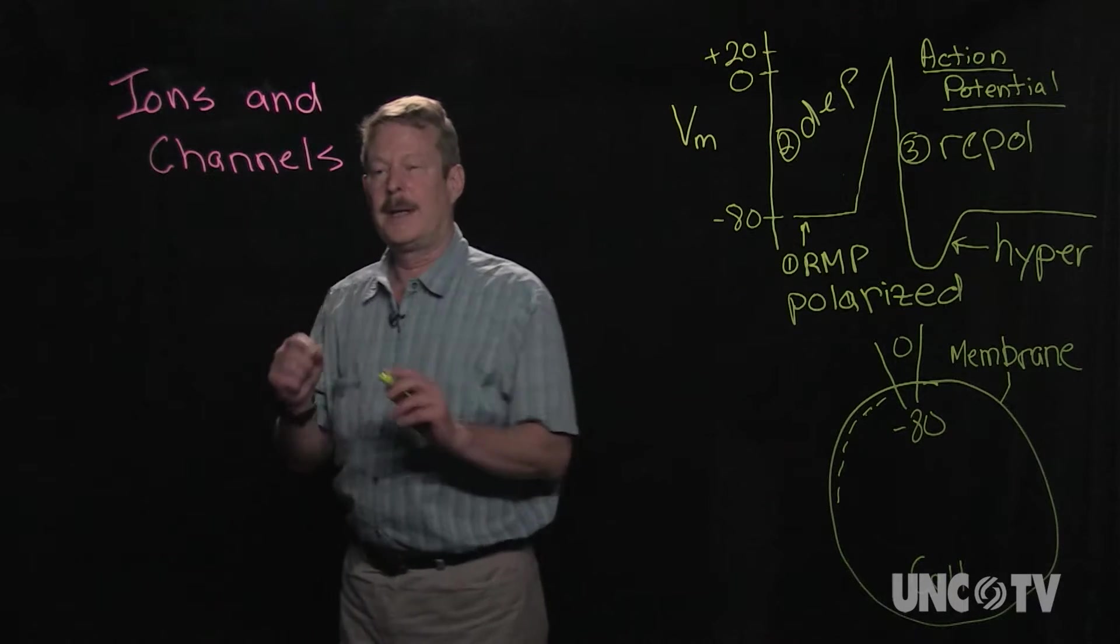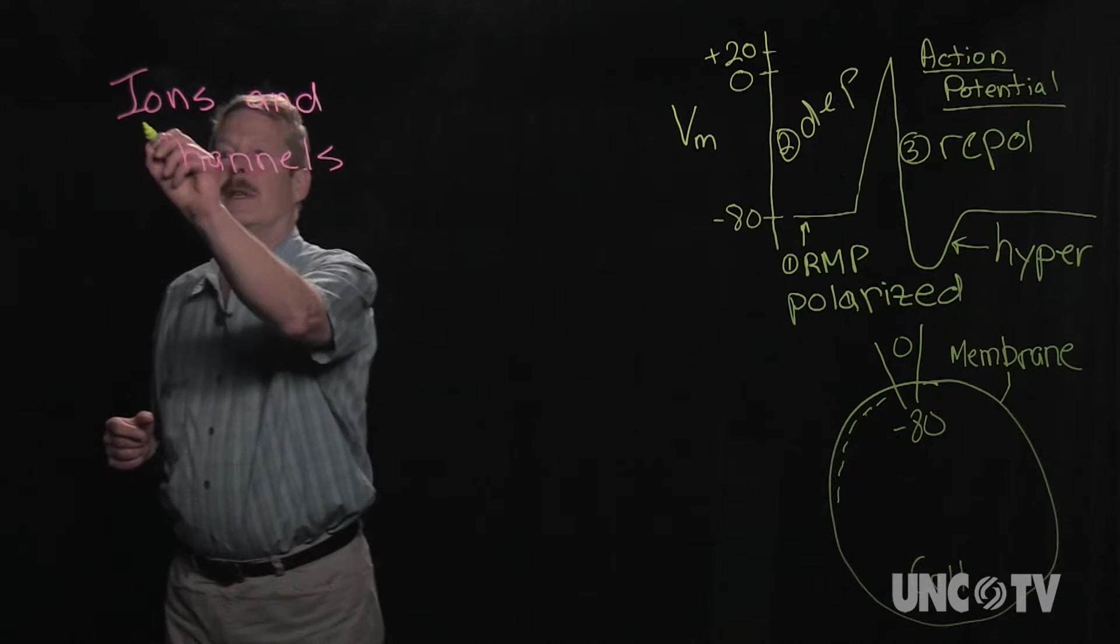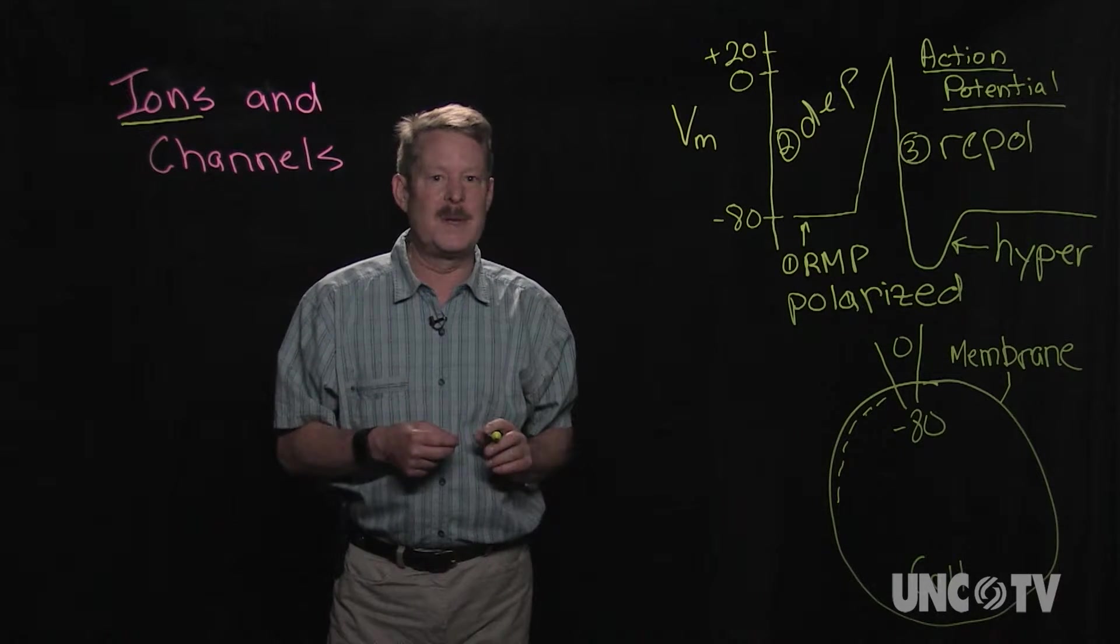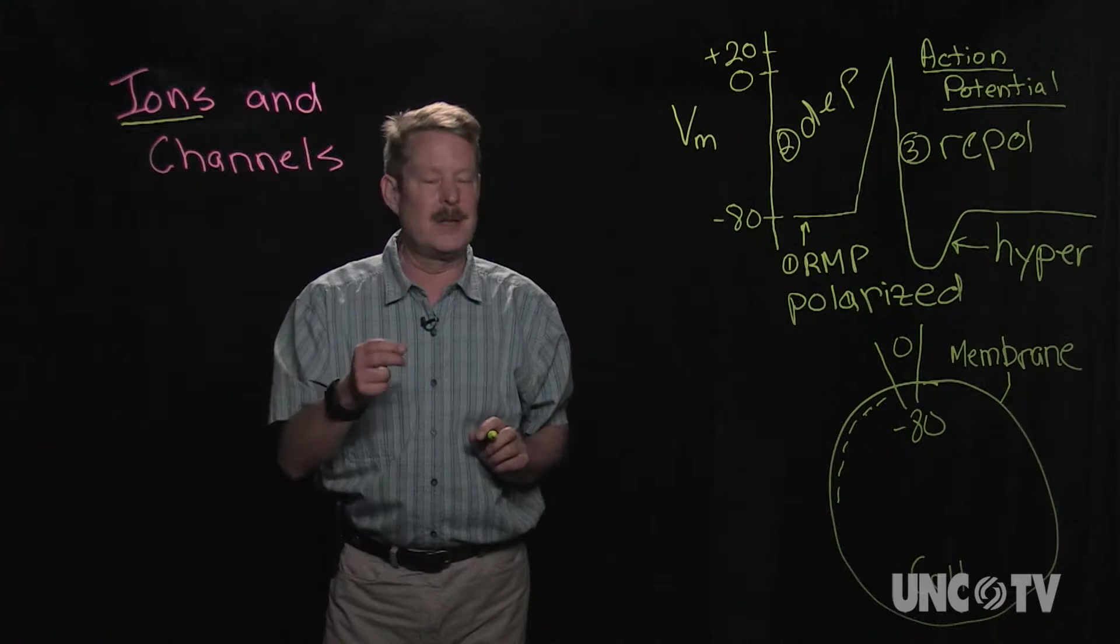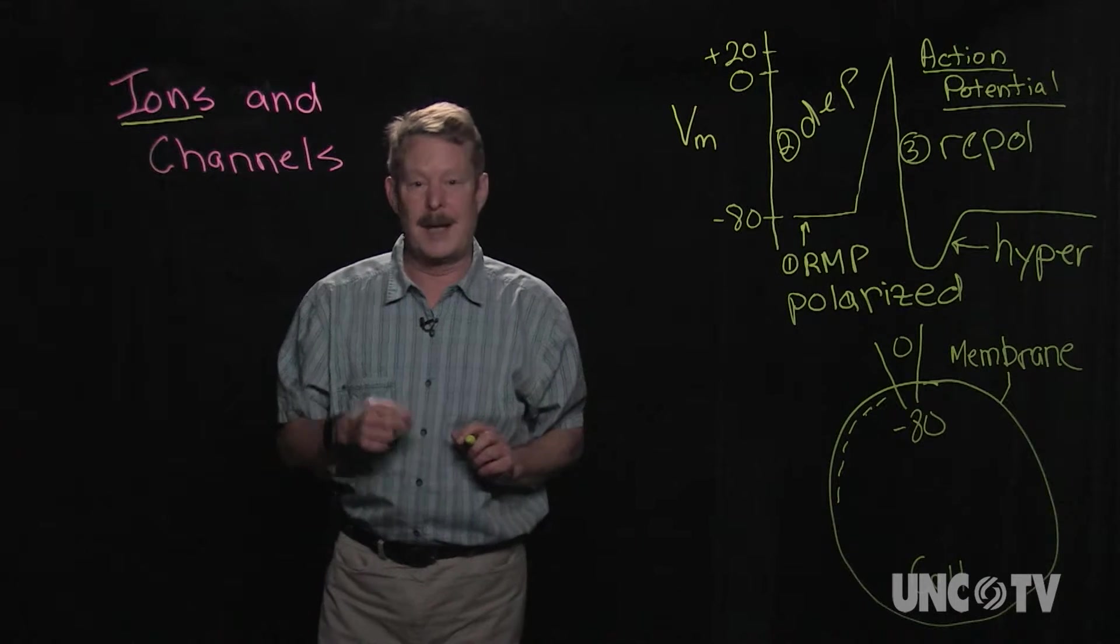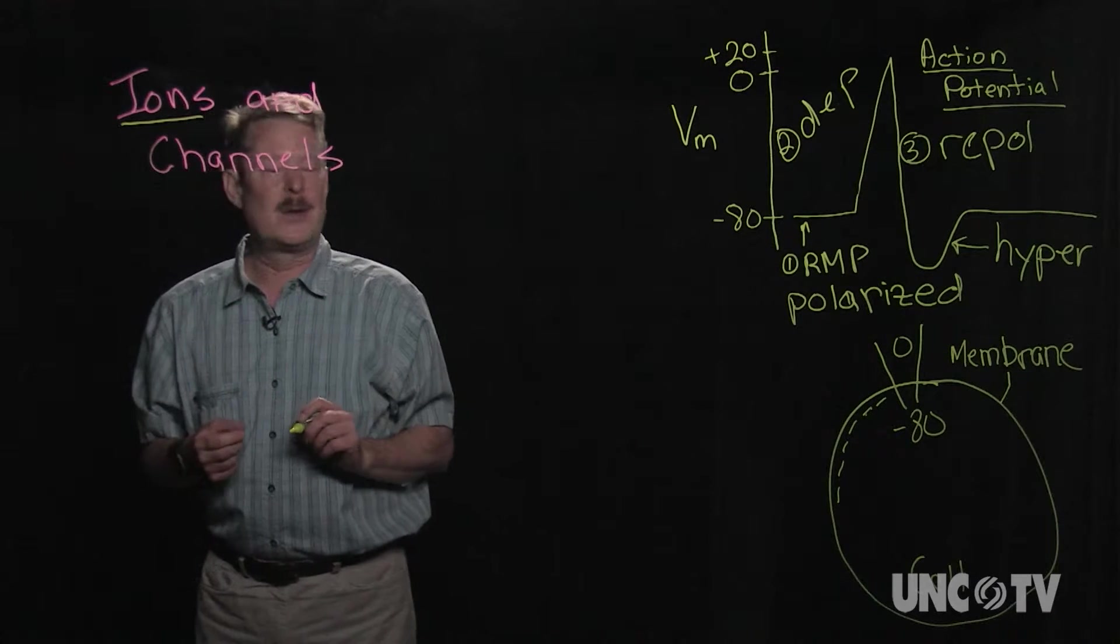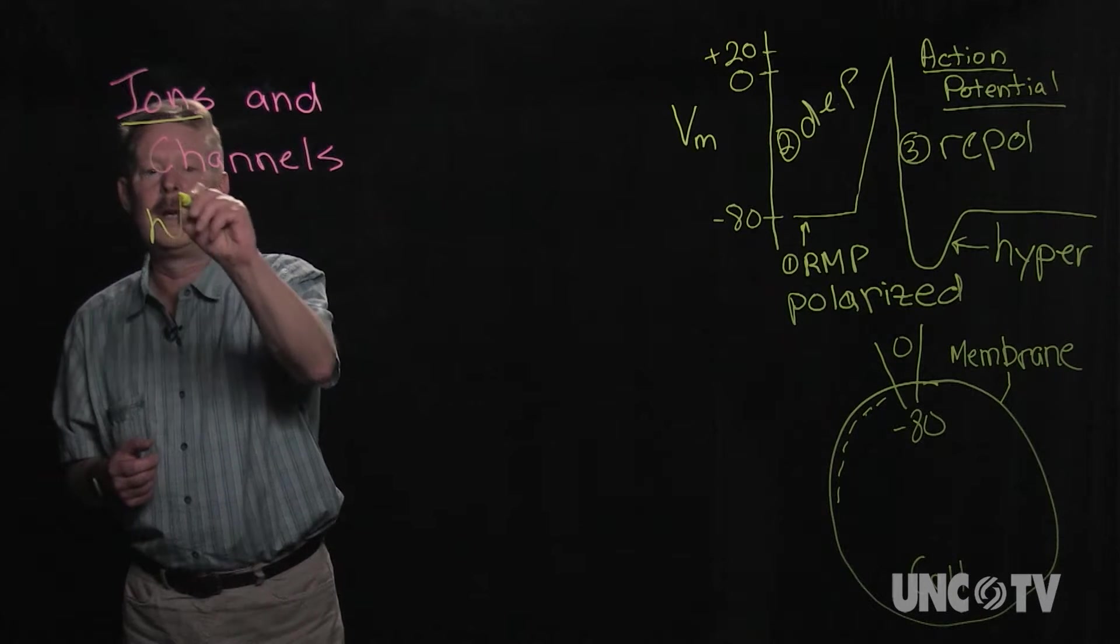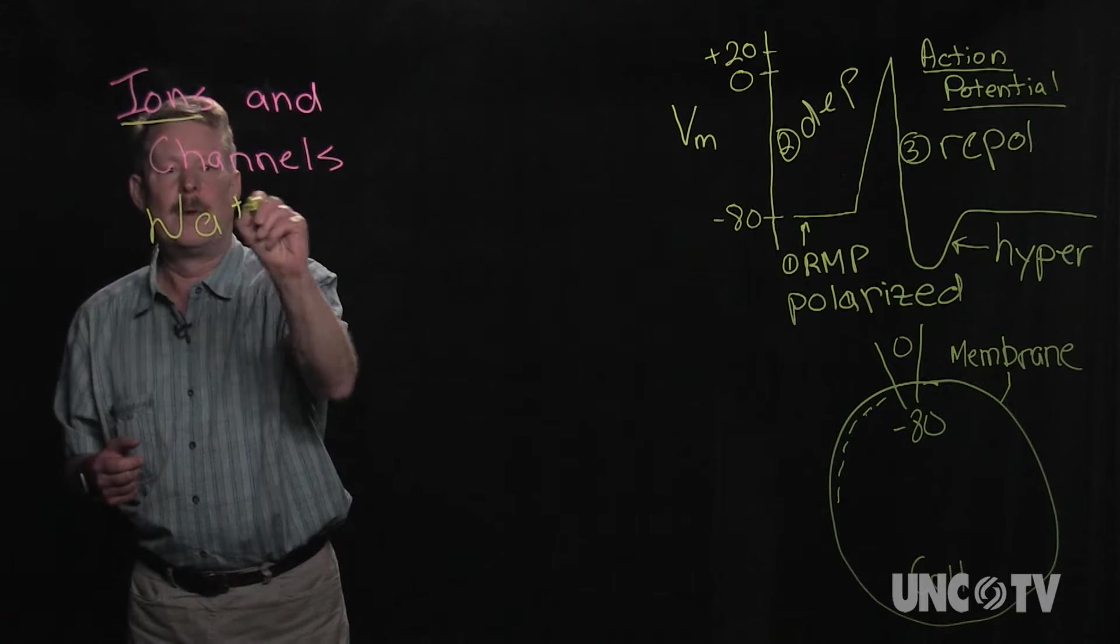So now, how do we actually change the membrane potential itself? It's important that we use and understand the term ion. These changes in the membrane potential are due to changes in the ions. The ions are going to flow and create current. Let's look at some important ions. I'm sure you've heard of many of them before.